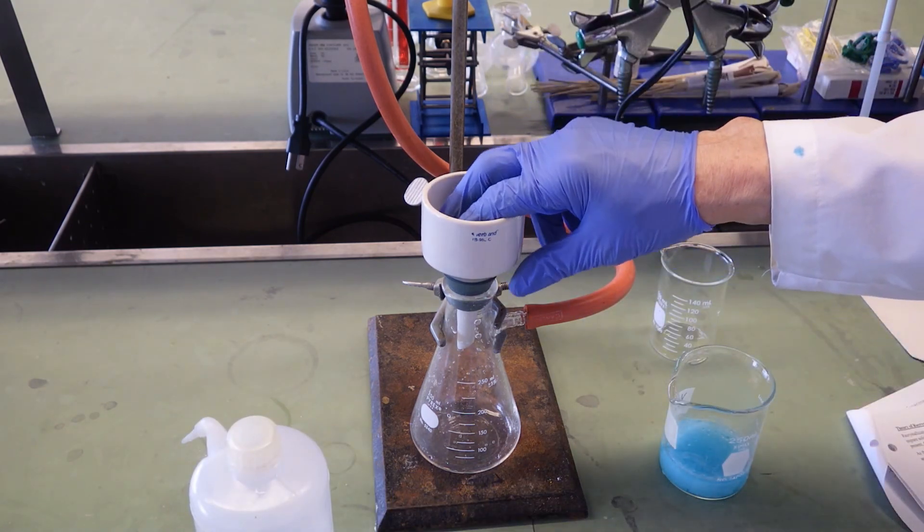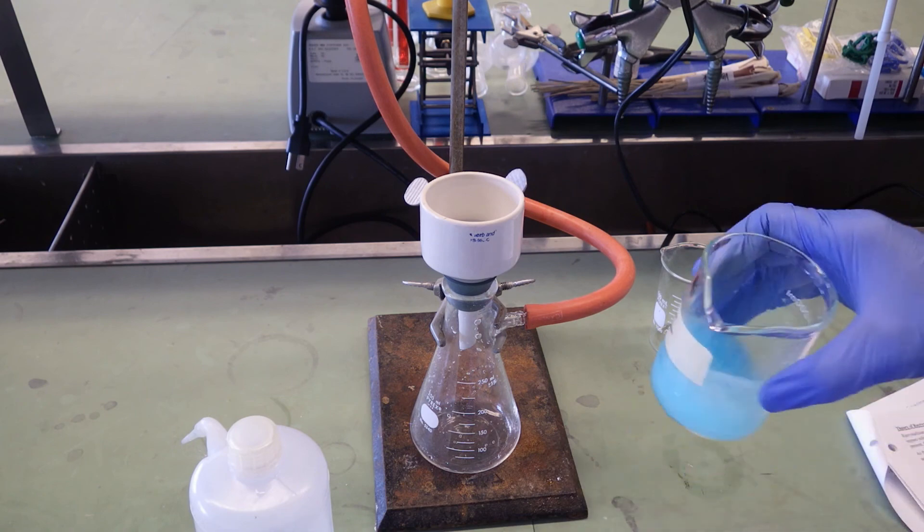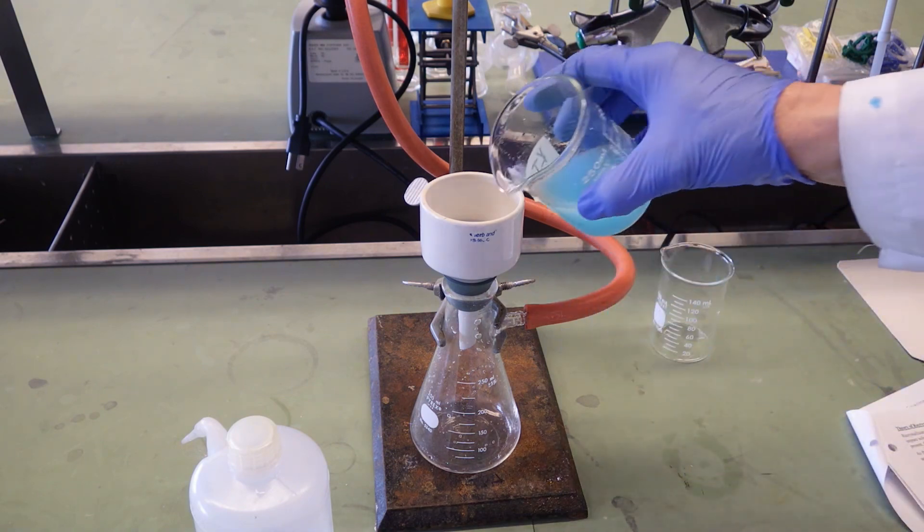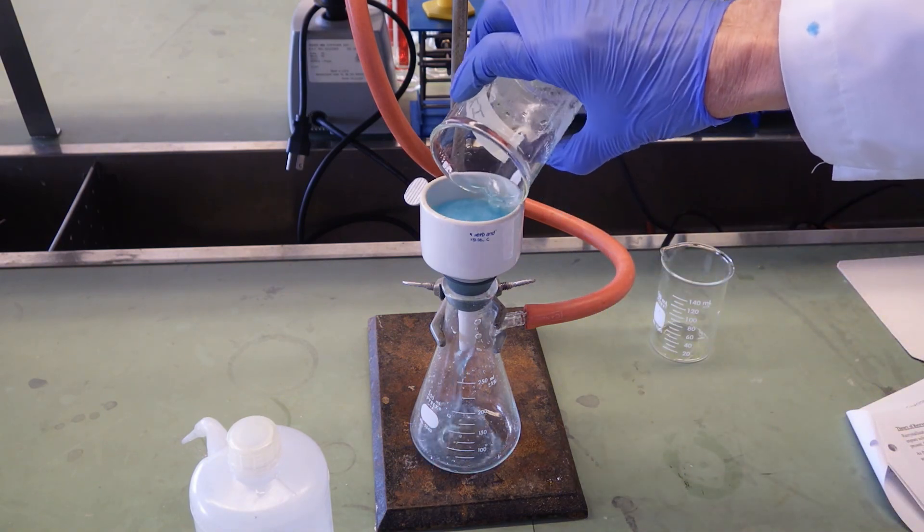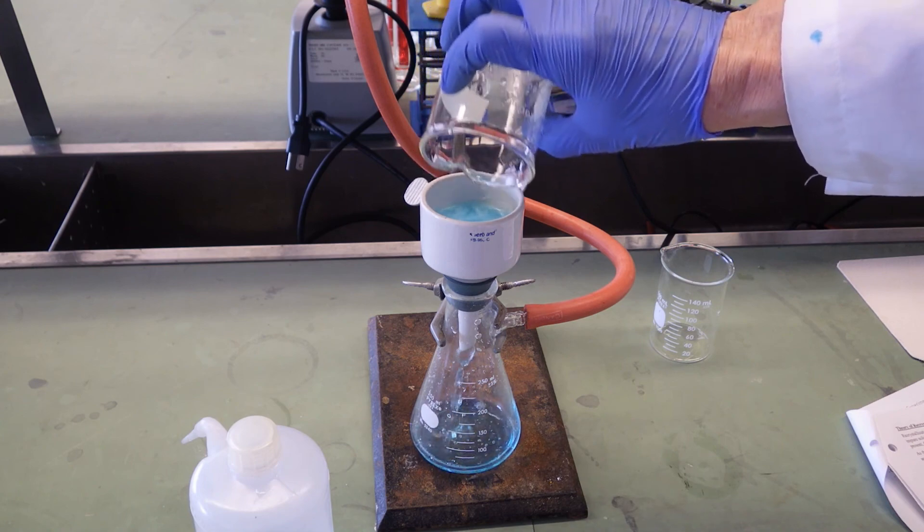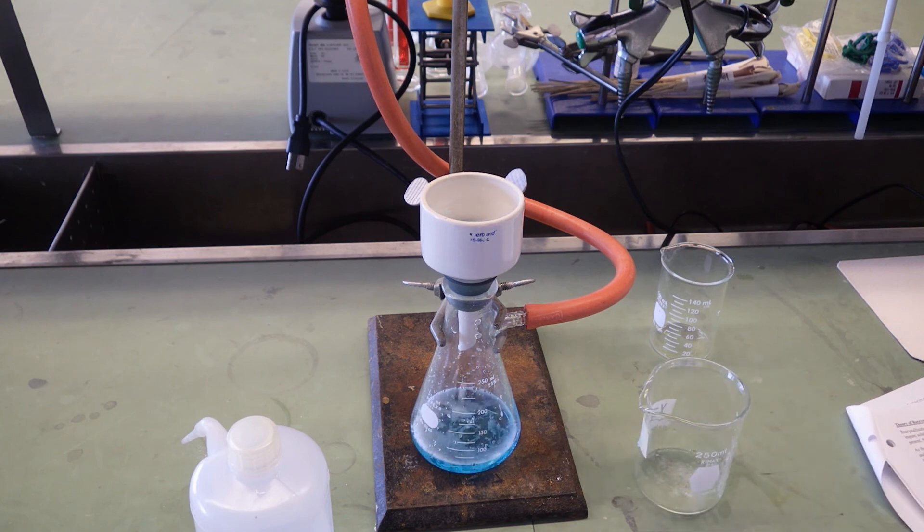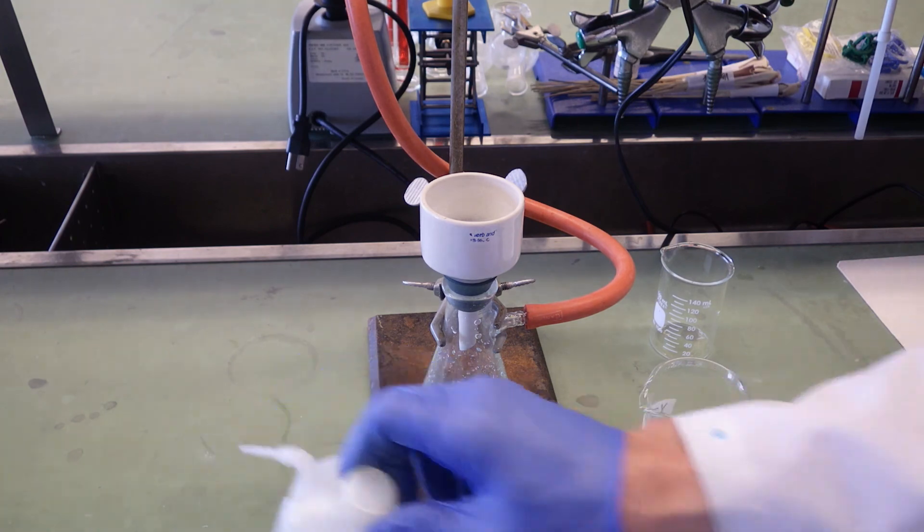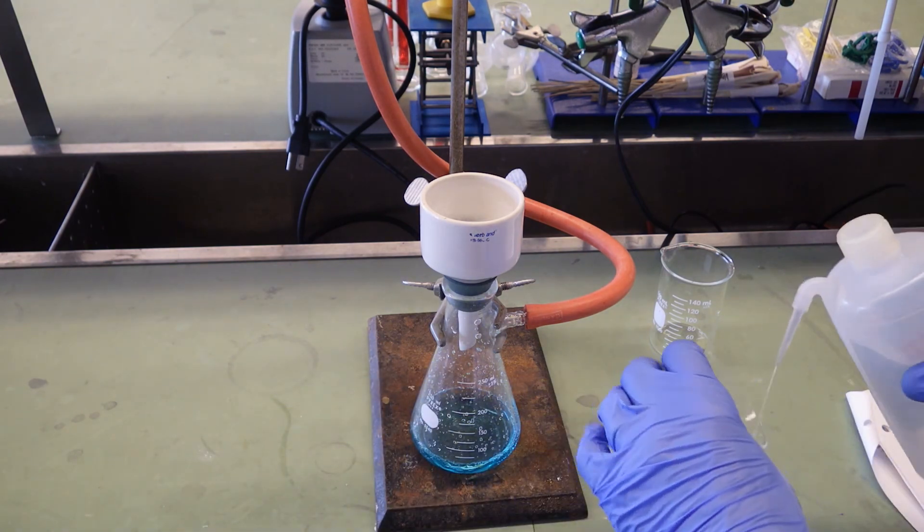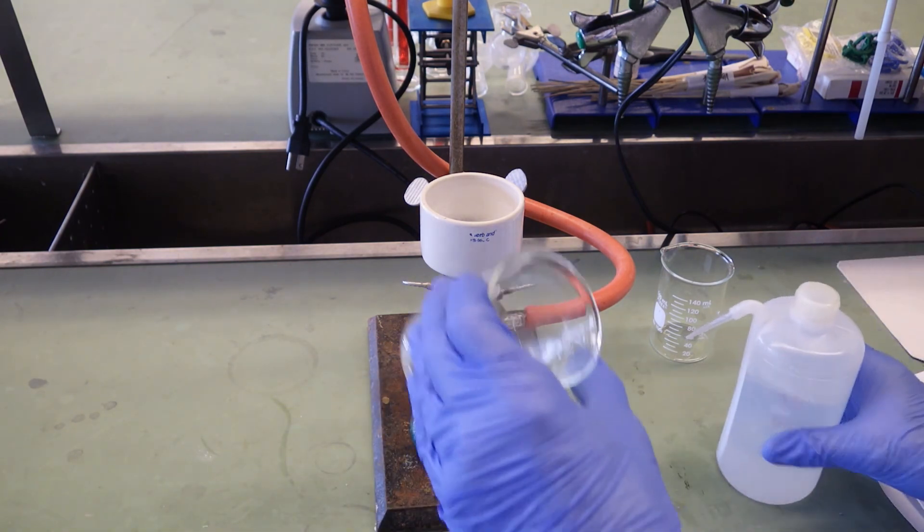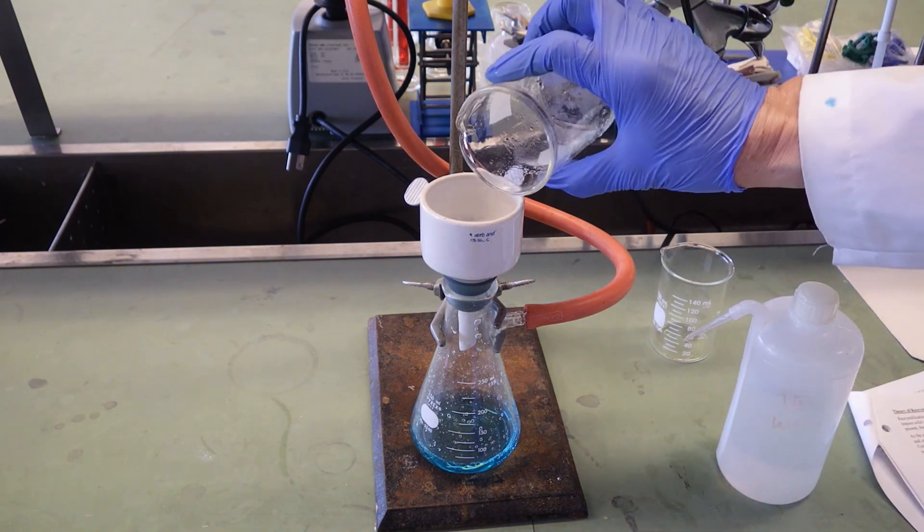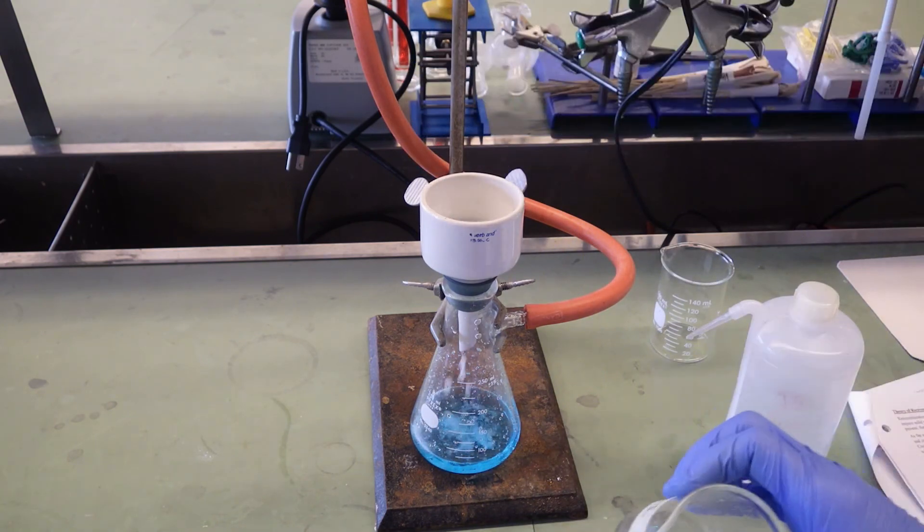Whenever you pour solids onto a Buchner funnel, pour them quickly—as quickly as you can without spilling it—so that you cover the entire surface of the filter paper. You don't want to clump in the middle; you want it evenly spread over the surface. Similarly, when you wash that precipitate, spread water over the entire surface. Don't spray it on. This is the way it's done industrially—it's called plug flow on vacuum filtration systems.